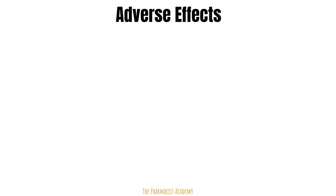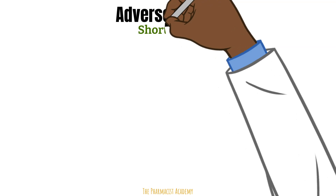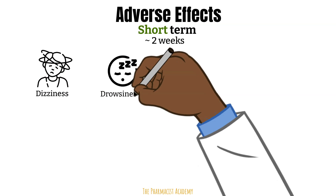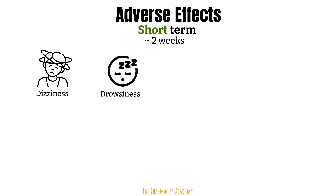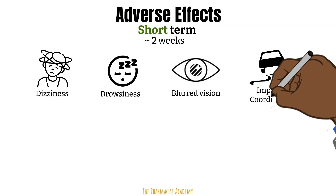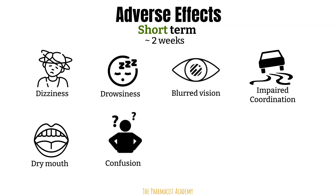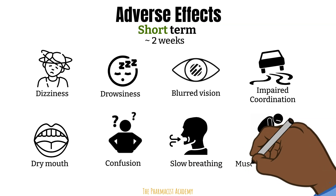Adverse effects can be divided into short-term and long-term. Short-term use refers to about two weeks or less. Side effects include dizziness, drowsiness, blurry vision, impaired coordination — which is why operating a vehicle is not recommended. Drinking alcohol in combination with benzodiazepines may heighten these effects. These agents can also cause dry mouth and confusion — benzos slow things down in the brain, affecting memory. They can also slow down breathing and weaken your muscles.